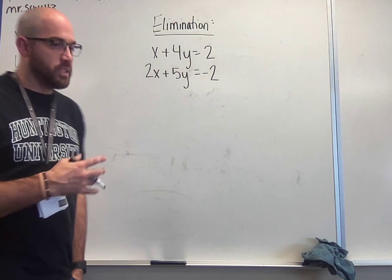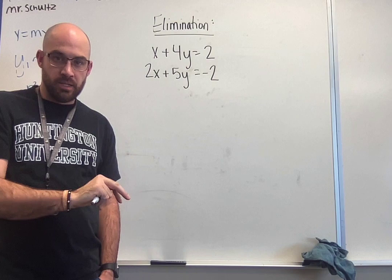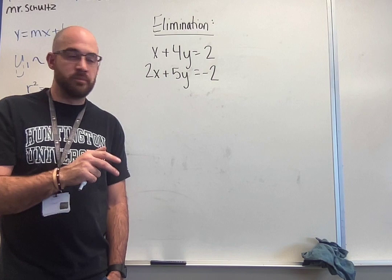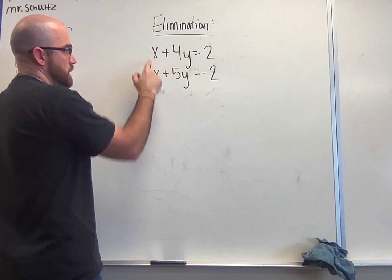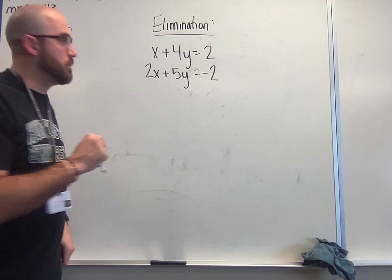For this one, the goal is to get it to where we have the same number but opposite signs for one of our variables. It doesn't matter if it's your x or your y, but you need to make sure that you have the same number and opposite signs for this to work. To make this happen, we use multiplication.